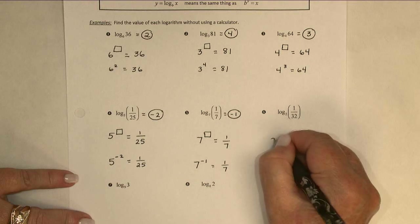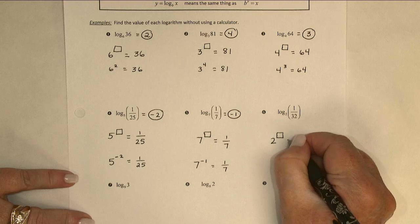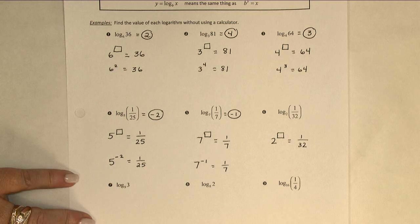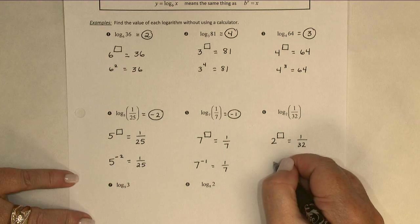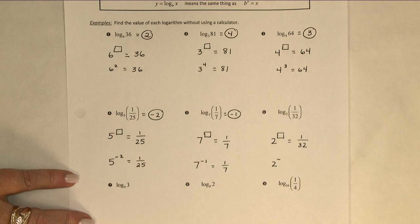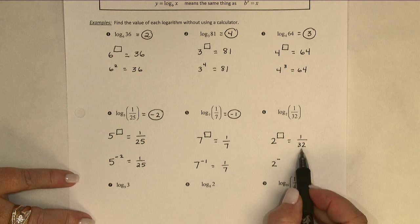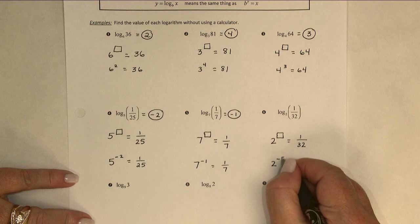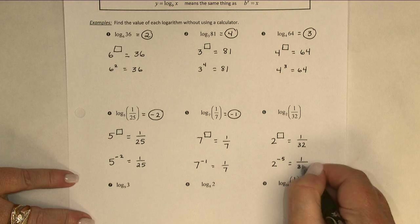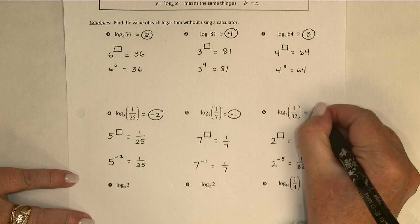One more fractional argument. 2 to what power gives us 1 32nd? Right away, I know it's going to be a negative exponent in order to put that into the denominator. And I also know that 2 to the 5th power is 32. So, the exponent is negative 5. That's the value of the logarithm.